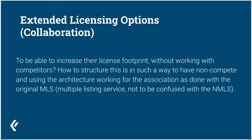Extended licensing options — how to increase your license footprint without actually getting a license, and how to work without working with competitors. The answer is taken from the MLS — the Multiple Listing Service, not to be confused with the NMLS in the United States. The Multiple Listing Service basically allows two realtors to sell one house by sharing the commission, and that's exactly what we do. We get a primary license holder to work with you and share the commission on the transaction. We've been very successful with it — there is no competition as such.